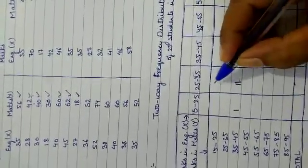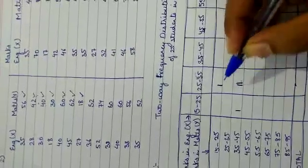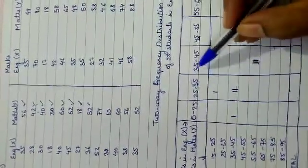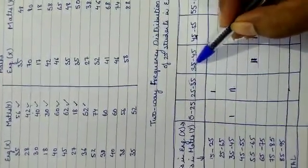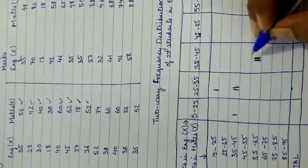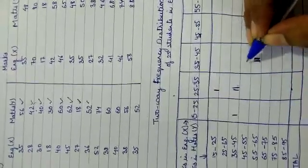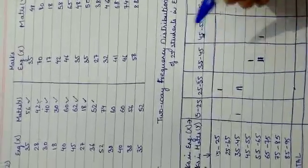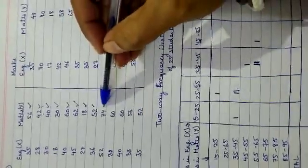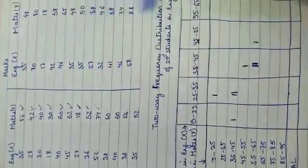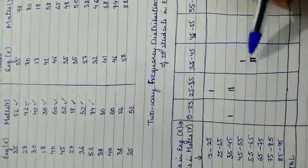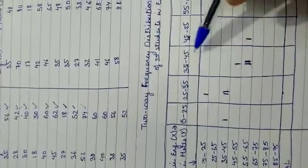Next is X=36 and Y=52: X=36 falls in 35–45 and Y=52 falls in 45–55, so one tally mark there. Be very attentive when putting the tally marks. Next is X=52 and Y=74: X=52 falls in 45–55 and Y=74 falls in 65–75.